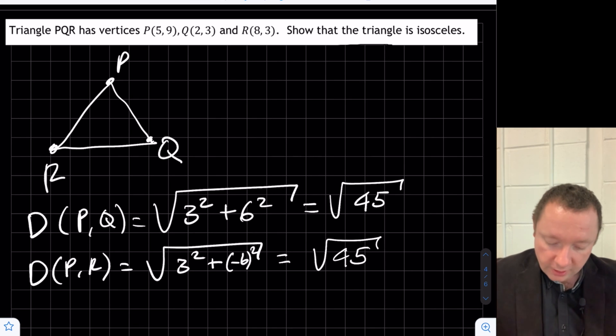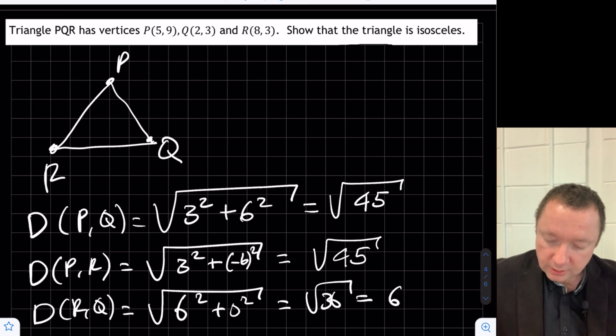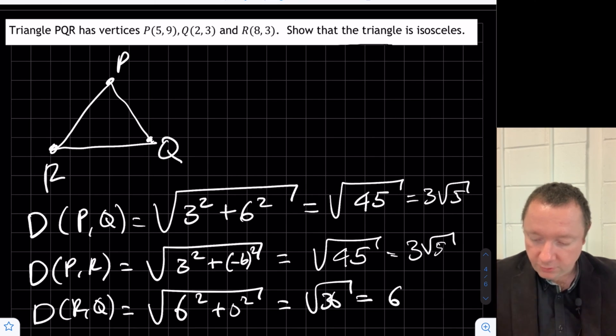And just a quick check on the last one, the distance from R to Q. 8 minus 2 is 6 squared, but 3 minus 3 is 0 squared. That's the square root of 36, which is 6. I've not even checked if I can simplify the square root of 45. Let me just double check that. 9 times 5 is 3 root 5. And that is also then 3 root 5, if you are simplifying them.